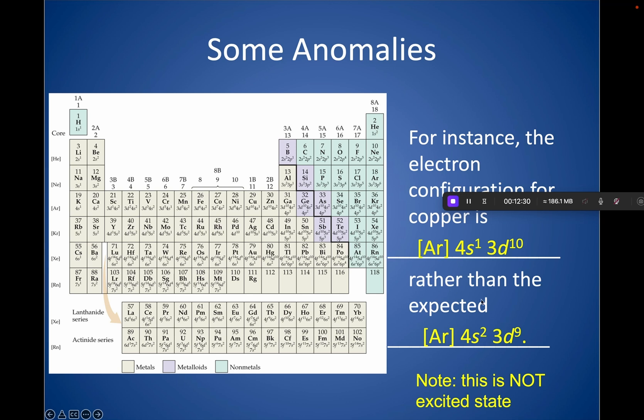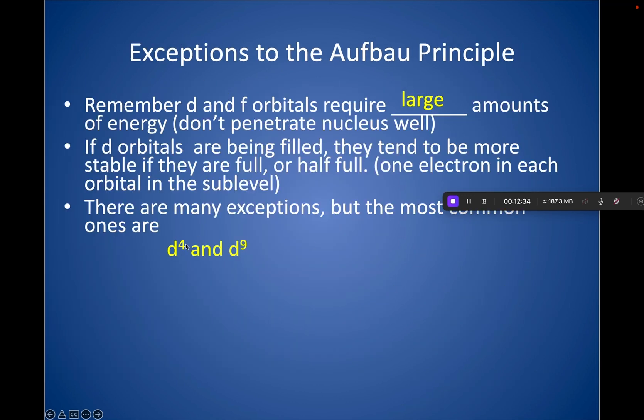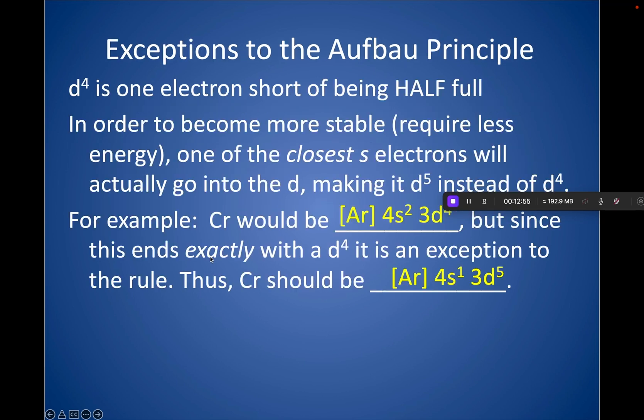And it actually happens when it's almost half filled, too. So it happens, I show in the D4 category where you would normally get 4s2, 3d4. It ends up being 4s1, 3d5. Nothing that you need to know if you were on the AP exam or one of my exams and you wrote 4s2, 3d4 for one of them, I would definitely give it. So you don't have to know any of these exceptions.